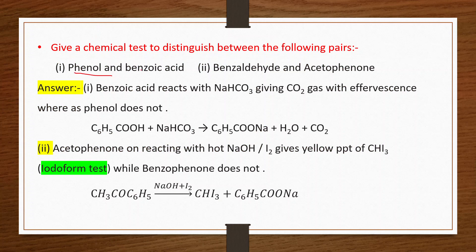To distinguish phenol from benzoic acid: benzoic acid reacts with NaHCO₃ giving CO₂ gas with effervescence, whereas phenol does not. Alternatively, use the FeCl₃ test — phenol gives a violet color with FeCl₃ while benzoic acid does not.